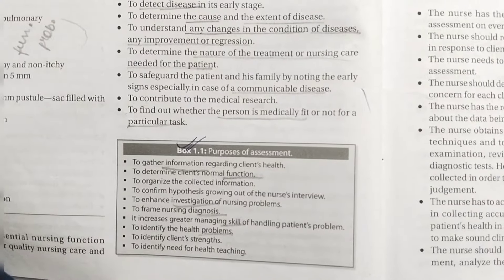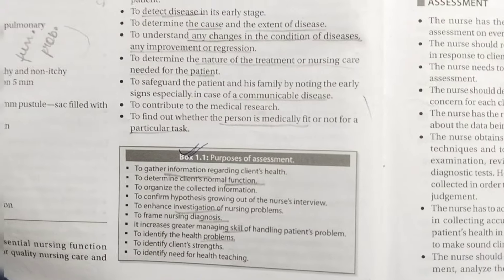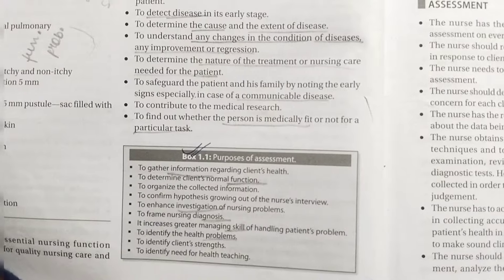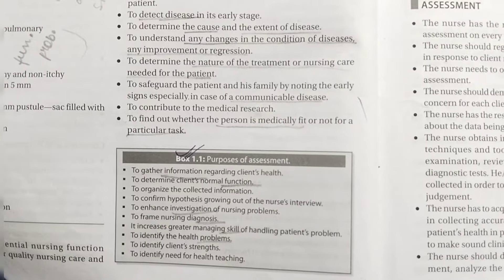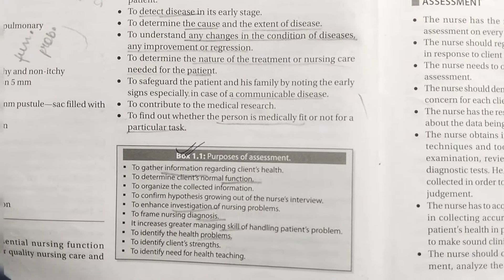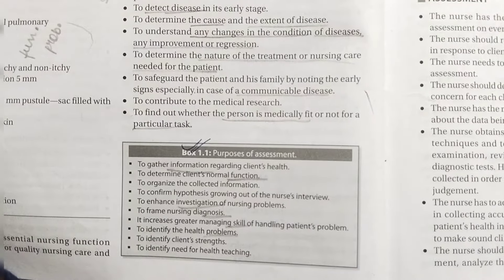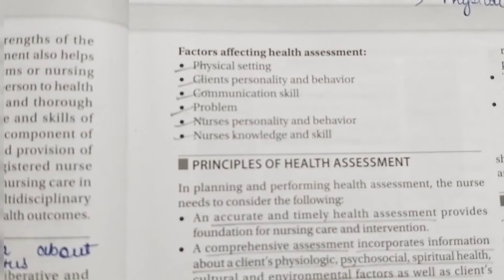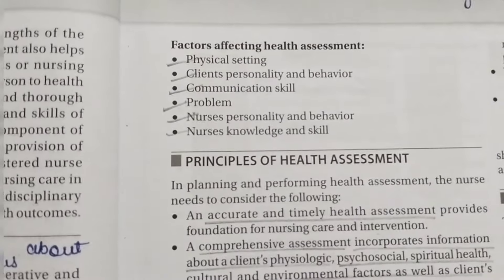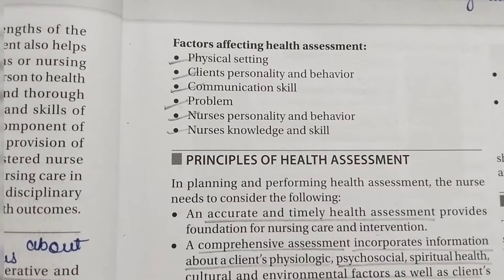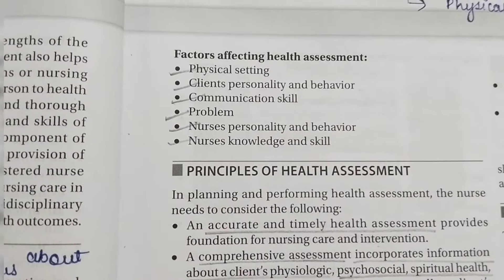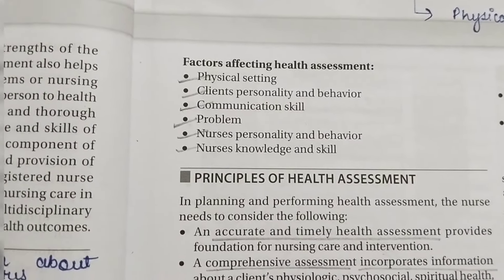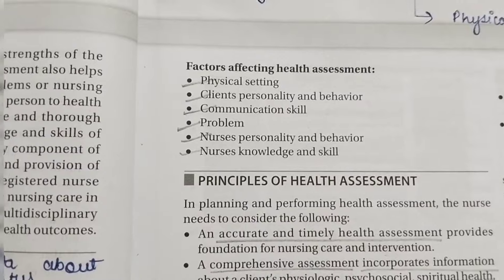For NCP, it is important that you make it priority-wise, as evidence by. This is important — in the next unit when we discuss nursing process, I will discuss it in detail. Next we discuss factors affecting health assessment: physical setting, client personality and behavior, communication skill problems, nurse personality and behavior, and nurse knowledge and skill. These are the factors that affect the health assessment process.